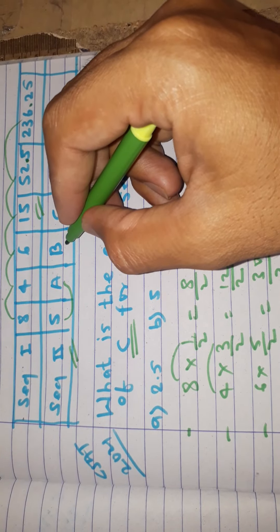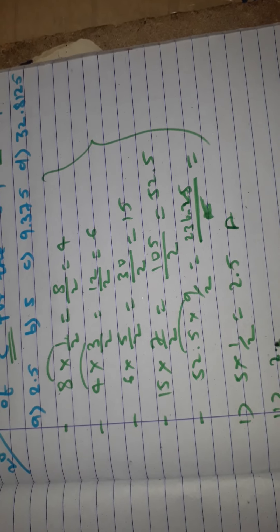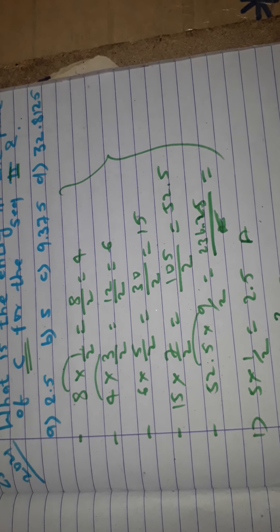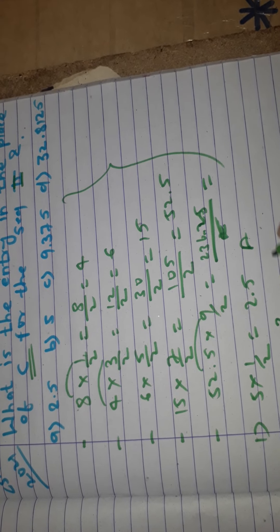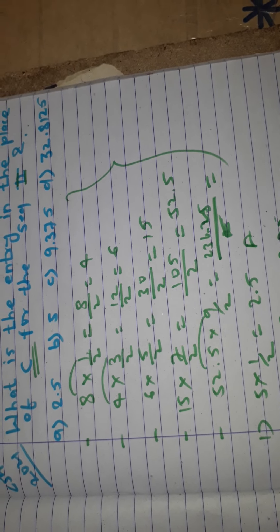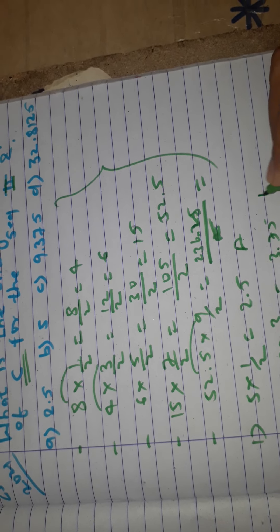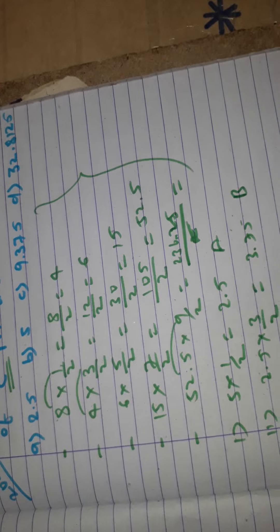The value of b: this a value 2.5 into 3/2 equals 3.75. This is the value of b.